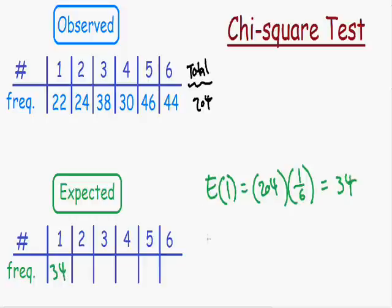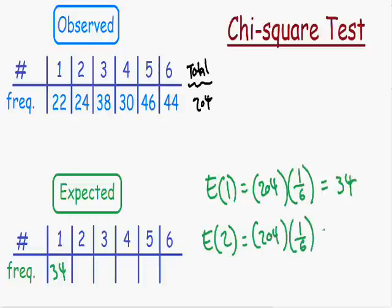It's going to be the same for every outcome of the die. How many times would we expect the number 2? If you roll the dice 204 times with a 1 in 6 chance of rolling a 2, you also expect to roll it 34 times. The expected value for every outcome of the die is equal to 34.